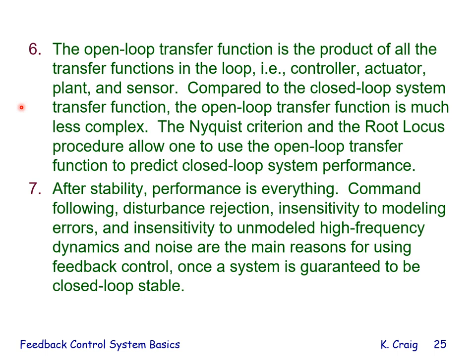Number 6: the open-loop transfer function is the product of all transfer functions in the loop — controller, actuator, plant, and sensor. Compared to the closed-loop system transfer function, the open-loop transfer function is much less complex. The Nyquist criterion and root-locus procedure allow one to use the open-loop transfer function to predict closed-loop system performance. Number 7: after stability, performance is everything — command following, disturbance rejection, insensitivity to modeling errors, and insensitivity to unmodeled high-frequency dynamics and noise are the main reasons for using feedback control.